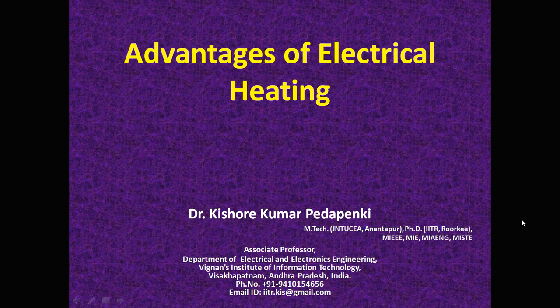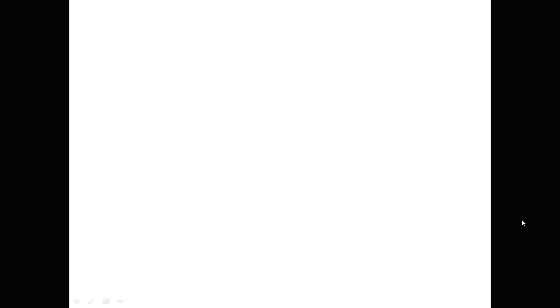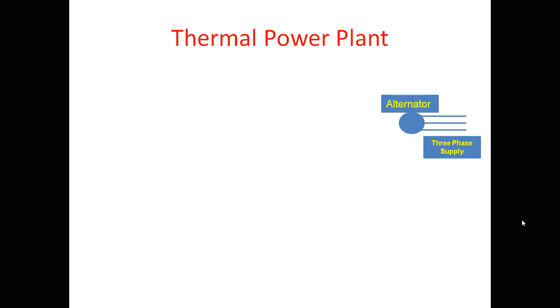Let us see the thermal power plant first. I need three-phase supply to be produced, so I should have an alternator which converts mechanical energy into electrical energy. This is the alternator. For the alternator, I should get mechanical energy, so this is the turbine.